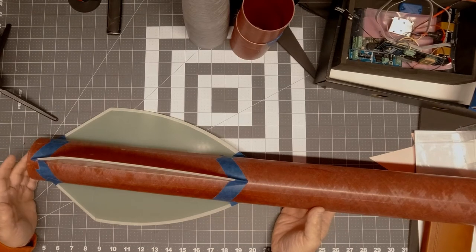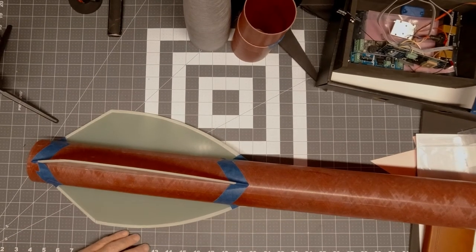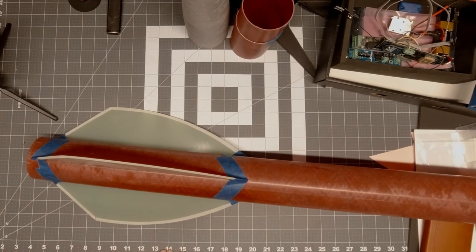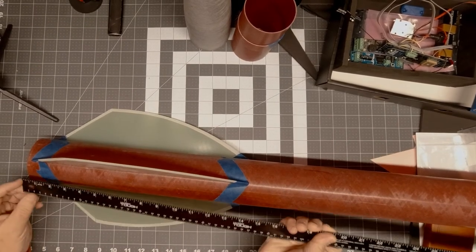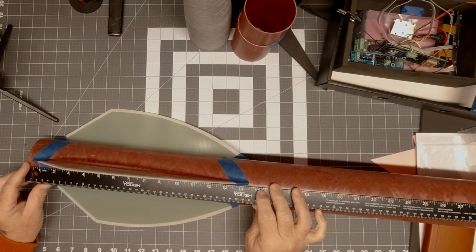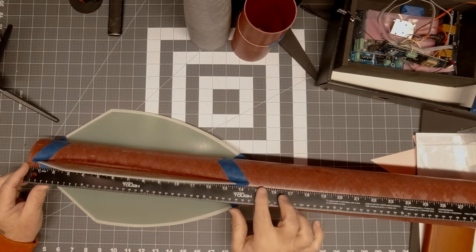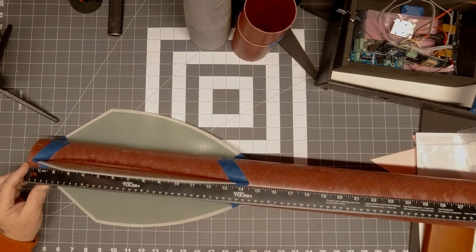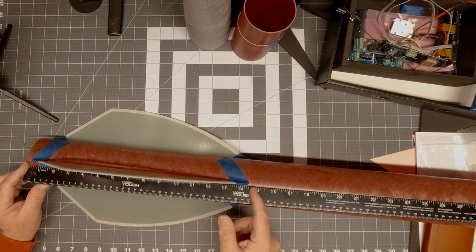The first thing up is the motor tube and the fin can construction. The motor tube - the kit comes with a 15 inch motor tube. If we lay a straight edge down here we see that puts our motor tube just above where the fins stop.